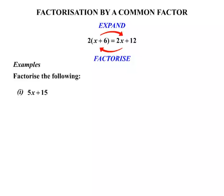We're asked to factorize the following. Firstly, 5x plus 15. Now what we need to look at is: is there a factor, a number that goes into both terms? Hopefully you can see that 5 is the number that would go into both. So we take 5 outside of the brackets.